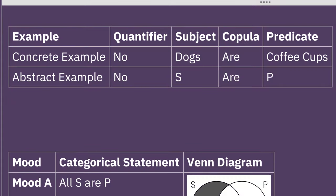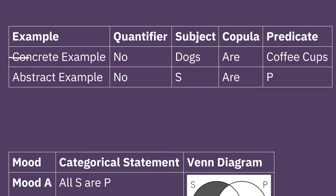Let's begin by doing a quick review of the parts of these statements. So I have here our first concrete example and then our abstract example. For each of these statements we have four parts: our quantifier, our subject, our copula, and our predicate.